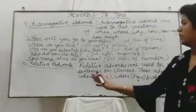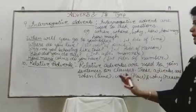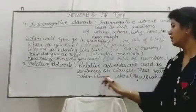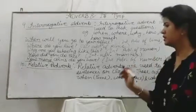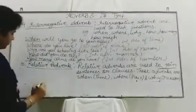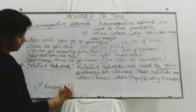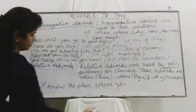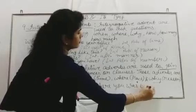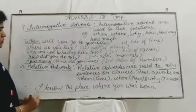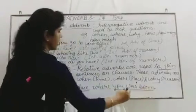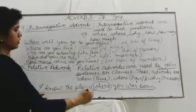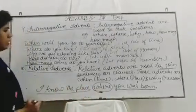The last type is relative adverb. Relative adverbs are used to join sentences or clauses. These adverbs are when, where, and why. For example: 'I know the place where you were born.' Here, 'I know the place' is clause one and 'where you were born' is the second clause. 'Where' joins and relates the two clauses, making it a relative adverb.